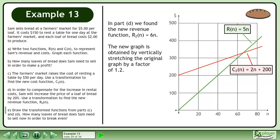In part D, we found the new revenue function, R2 equals 6n. The new graph is obtained by vertically stretching the original graph by a factor of 1.2. The animation shows the revenue graph being vertically stretched by a factor of 1.2.